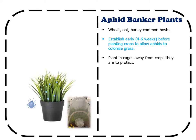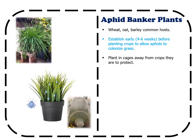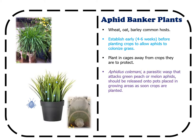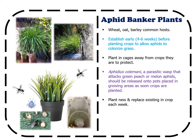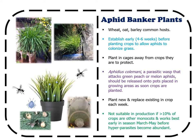When crops are planted, the pots with aphids can be placed into the growing areas, then inoculated with Aphidius colemani, a parasitic wasp that attacks green peach or melon aphids. Each week, new systems should be planted and existing ones in the crop replenished. These systems are not suitable in production if more than 10% of the crops are monocots, such as ornamental grasses. This system works best early in the season before hyperparasites become abundant.